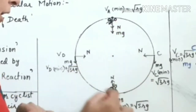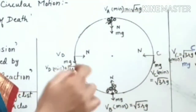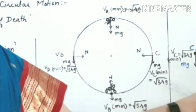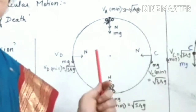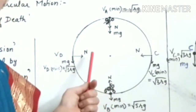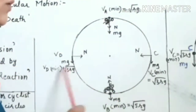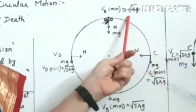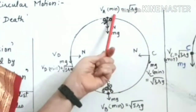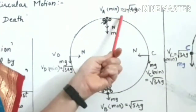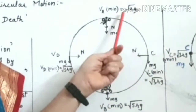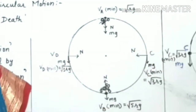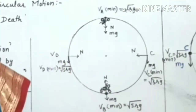In all cases, the normal reaction is always along the radius towards the center. Hence, the minimum velocity at the highest point for the stunt performer or motorcyclist should be under root of Rg. The minimum velocity is √(Rg).